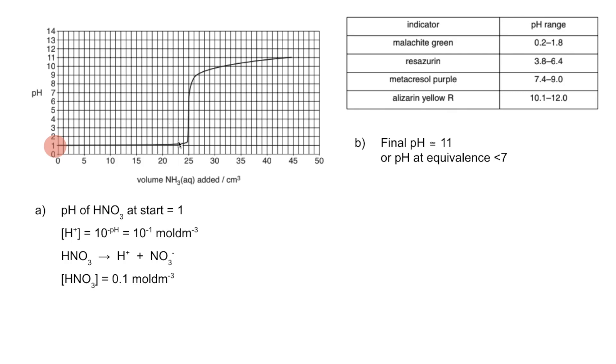Part C, the formula of the salt that's formed. Ammonia reacts with nitric acid to form ammonium nitrate, and there's the formula NH4NO3.